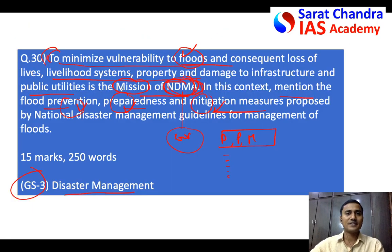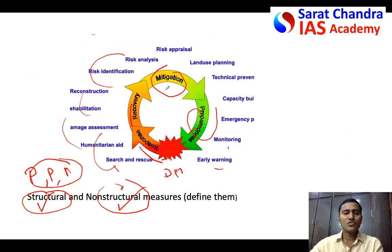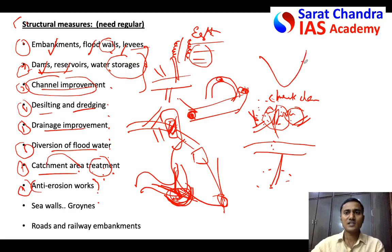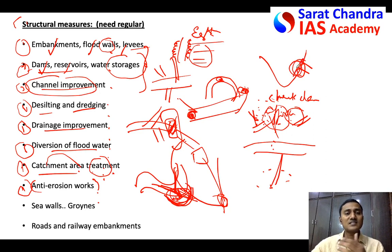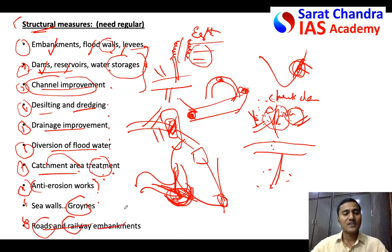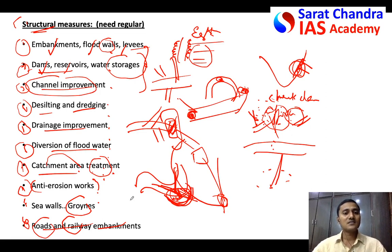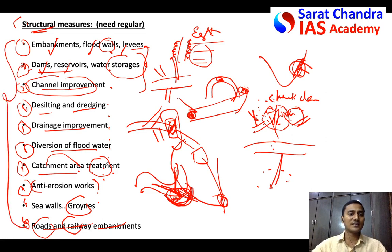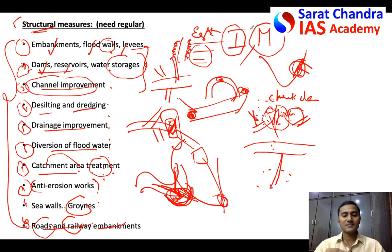Since the question asks about floods broadly — not just river floods — include one or two points on coastal flooding. During cyclones or storm surges, coastal flooding can occur along India's coastline. To reduce coastal flooding, sea walls and coastal protection structures called groins can be constructed. Also, roadways and railway embankments built along rivers and lakes should be properly designed, as poor embankment design increases flood damage. Remember to write one line that all structural measures require regular inspection and maintenance to be effective in the long term.